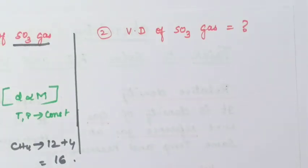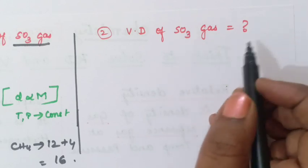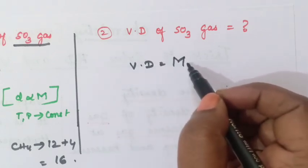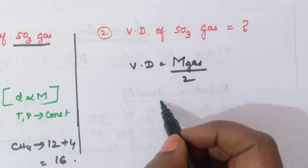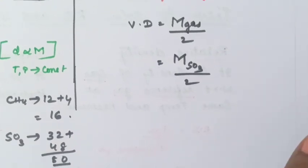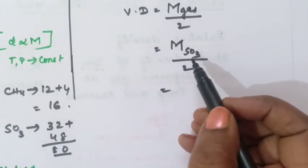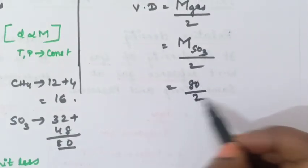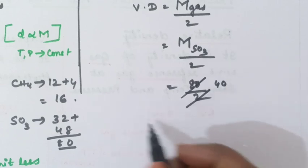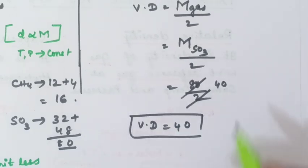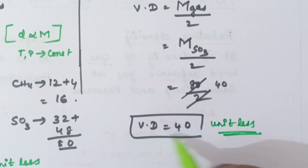Next, calculate the vapor density of SO3 gas. The formula for vapor density is: VD equals molar mass of gas divided by 2. Molar mass of SO3 we just found to be 80. So vapor density equals 80 divided by 2, which equals 40. Therefore vapor density equals 40. The unit is again unitless, so you just write the number: vapor density equals 40.